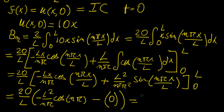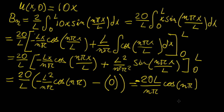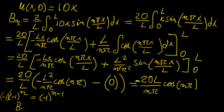This becomes 20l over nπ, and it's negative — so we need to take that into account. We can perform a further simplification using the fact that cosine(nπ) equals (−1)^n. With the minus sign out front, minus 1 times (−1)^n is the same as (−1)^(n+1). So our Fourier coefficient is 20l over nπ times (−1)^(n+1).